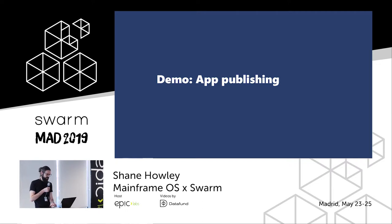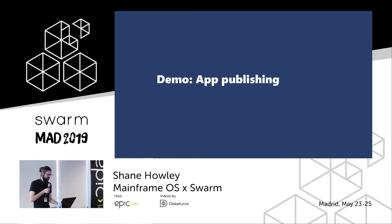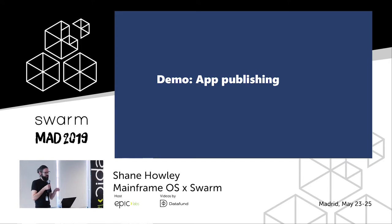That is the development flow for building dApps on Mainframe OS. For publishing, we use timelines — which Milos mentioned just before this. This allows you to have a history of app versions so you can roll back or see what versions are available and what changes were made.